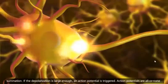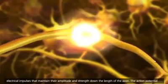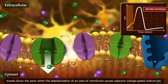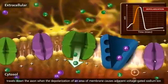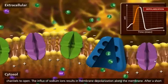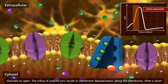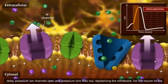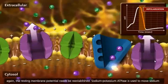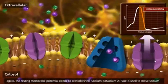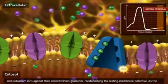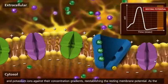Action potentials are all-or-none electrical impulses that maintain their amplitude and strength down the length of the axon. The action potential travels down the axon when the depolarization of an area of membrane causes adjacent voltage-gated sodium ion channels to open. The influx of sodium ions results in membrane depolarization along the membrane. After a short delay, potassium ion channels open and potassium ions flow out, repolarizing the membrane. For the neuron to fire again, the resting membrane potential needs to be reestablished. Sodium potassium ATPase is used to move sodium and potassium ions against their concentration gradients, reestablishing the resting membrane potential.